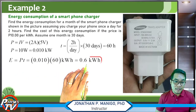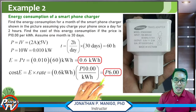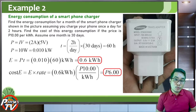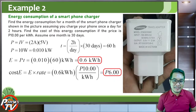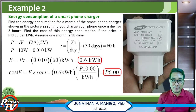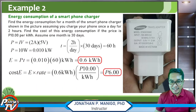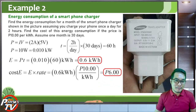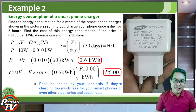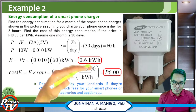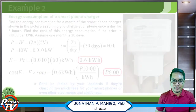Energy consumption is 0.01 kilowatts times 60 hours equals 0.6 kilowatt-hours. The cost is 0.6 kilowatt-hours times 10 pesos per kilowatt-hour equals 6 pesos per month. So if your landlord is charging you 100 pesos for charging your phone, that is far too much. You can show them this calculation — the power consumption of this charger is negligible at just 6 pesos a month.